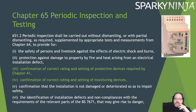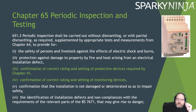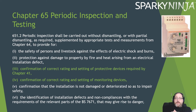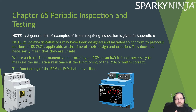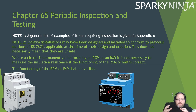Chapter 65, periodic inspection and testing. It shall be carried out without dismantling or with partial dismantling. We verify the safety of persons and livestock, protection against damage to property. But they've also added two things to check: confirming the correct rating and setting of protective devices required by Chapter 41 such as RCDs and selectable RCDs, and confirming the correct rating and setting of monitoring devices. Note 2 states existing installations may have been designed to conform to previous editions — this does not necessarily mean they are unsafe. Where a circuit is permanently monitored by an RCM or an IMD, it is not necessary to measure insulation resistance if the functional verification of the RCM and IMD is confirmed correct.